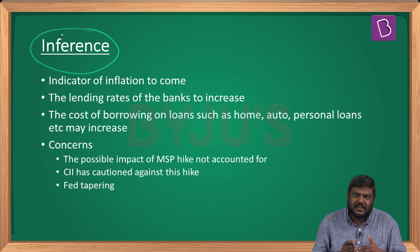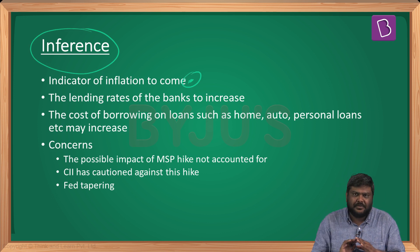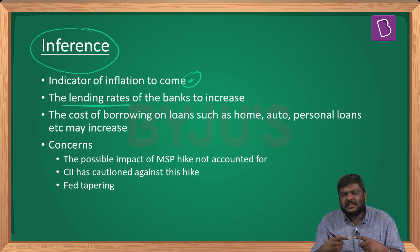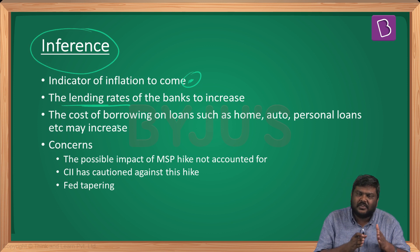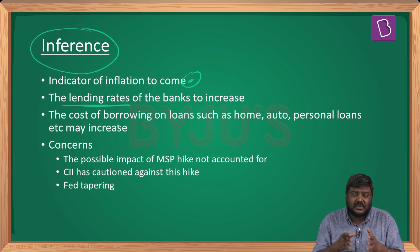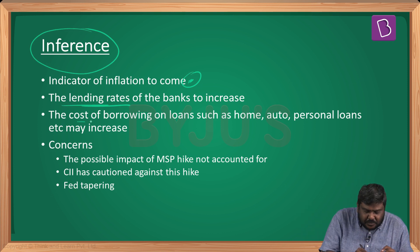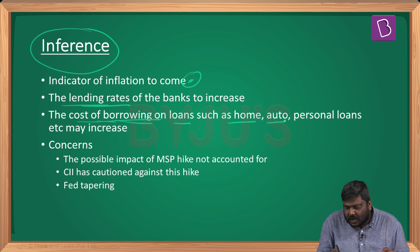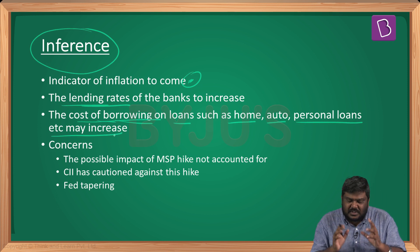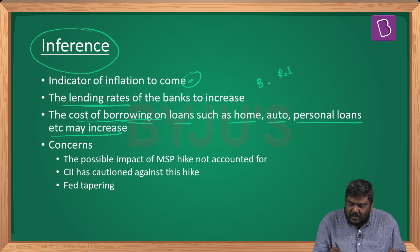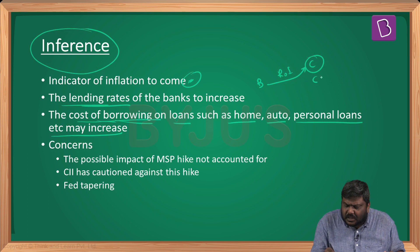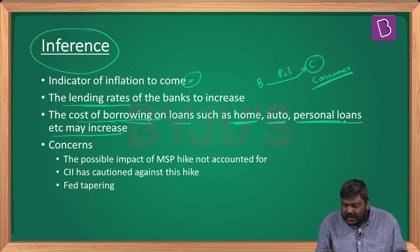Key inferences from the MPC announcement: first, the inflation rate will be increasing in the coming days. Second, lending rates of various banks will also increase — Bank of Baroda, Punjab National Bank, and various other public and private sector banks have already increased their lending rates. This repo rate hike of 25 basis points will further push up lending rates, meaning the cost of borrowing on home loans, auto loans, and personal loans may increase.